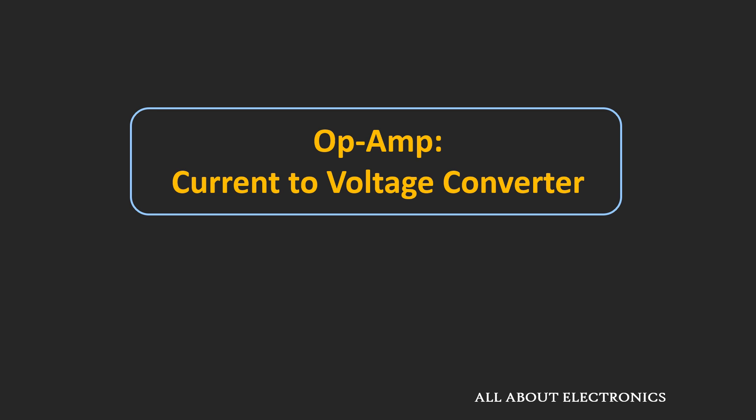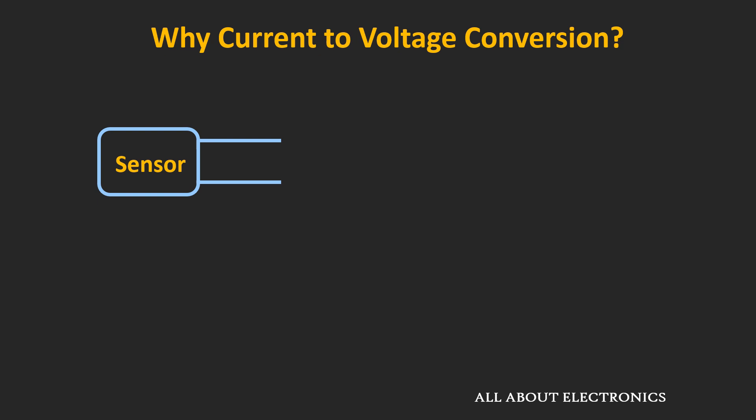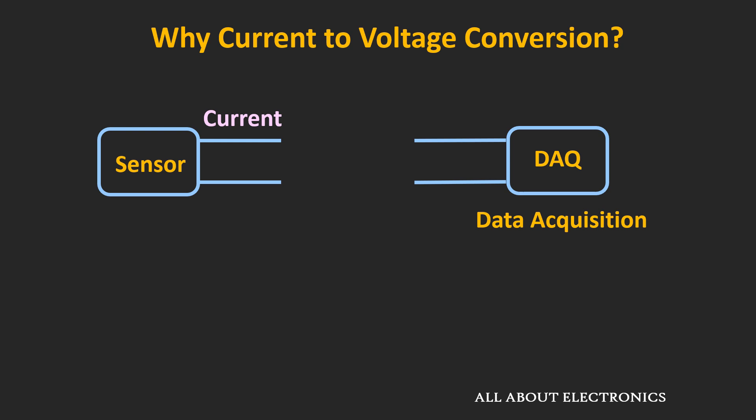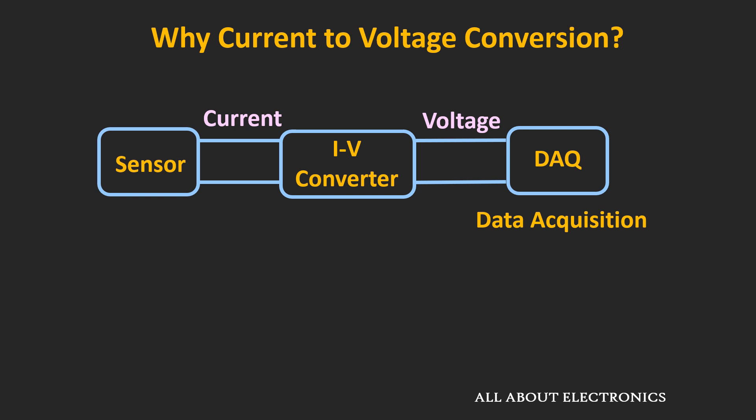This type of current-to-voltage converter circuits are useful in many applications. For example, let us say you have a sensor or circuit component which gives the output in terms of current — like a photodiode. And let us say you want to log the data of this photodiode for the entire day using a data acquisition system. Most of the time, this type of system accepts data in terms of voltage, so you need to convert this current into voltage. For this, I2V or current-to-voltage converters are useful.